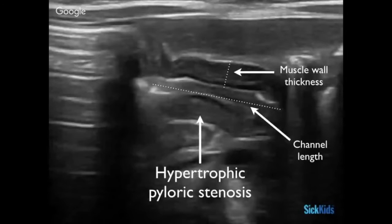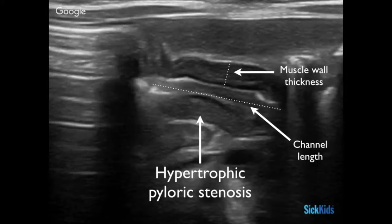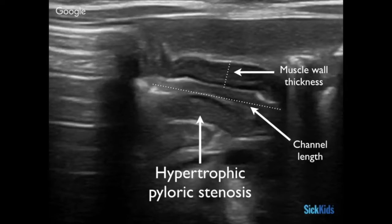Here we have a diagram with hypertrophic pyloric stenosis highlighted and some measurements. What do you think about where the calipers are placed for muscle wall thickness and channel length? Most of the time we measure inside from hyperechoic wall to hyperechoic wall, so we capture all that hypoechoic muscle. You really want to take advantage of your freeze function — most machines allow you to go back and forth through frames to find a good frame for measuring and get the best channel measurement.